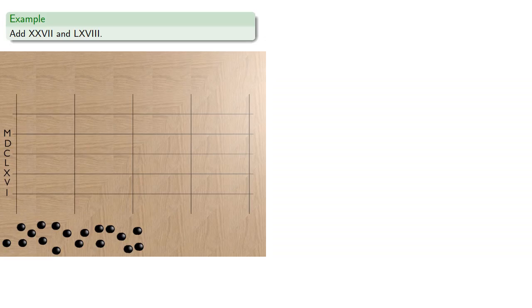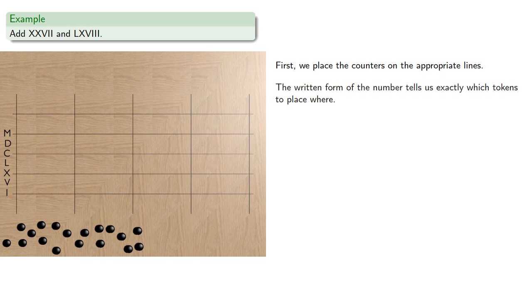So again, we could try to add two numbers. And so first, we'll place the counters on the appropriate lines. The important thing to remember is the written form of the number tells us exactly which tokens to place where.